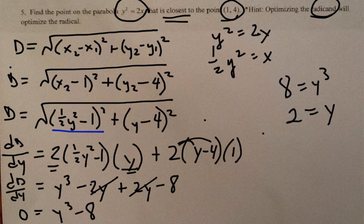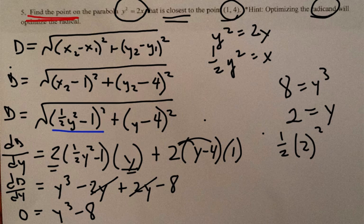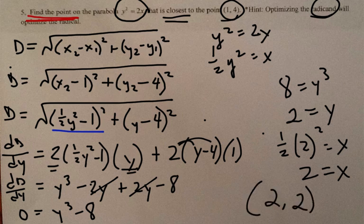Now that I know y, I need to find x because the problem asks for the point. Using x equals one half y squared with y equals 2: one half times 4 equals 2, so x equals 2. The point is (2, 2), and that's the answer.